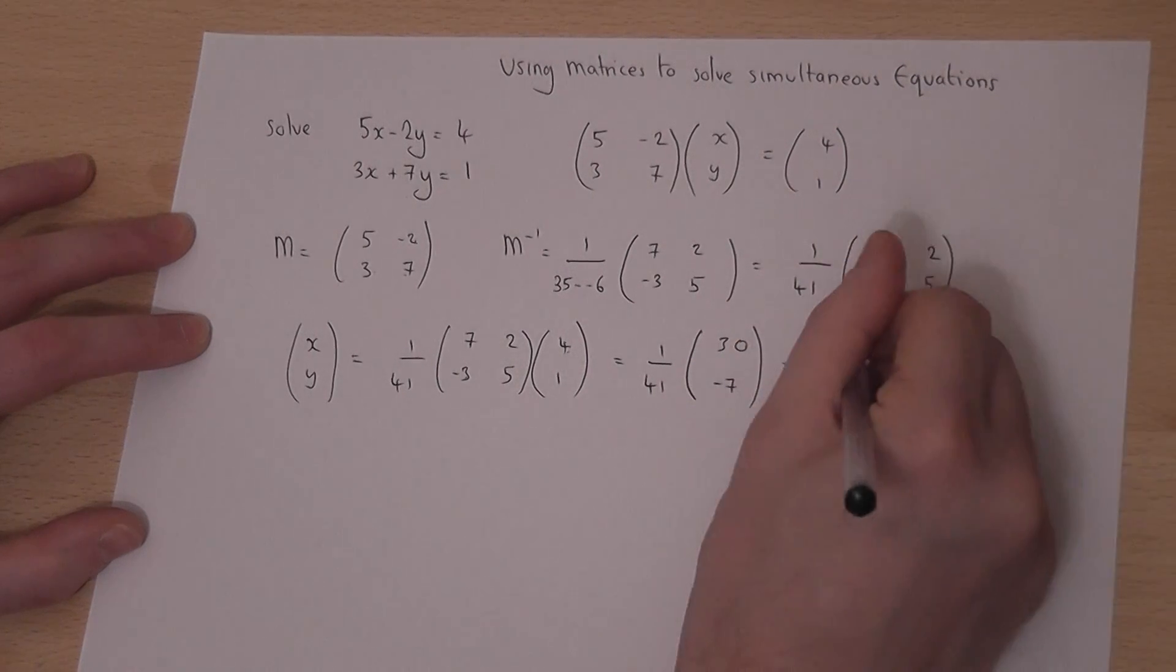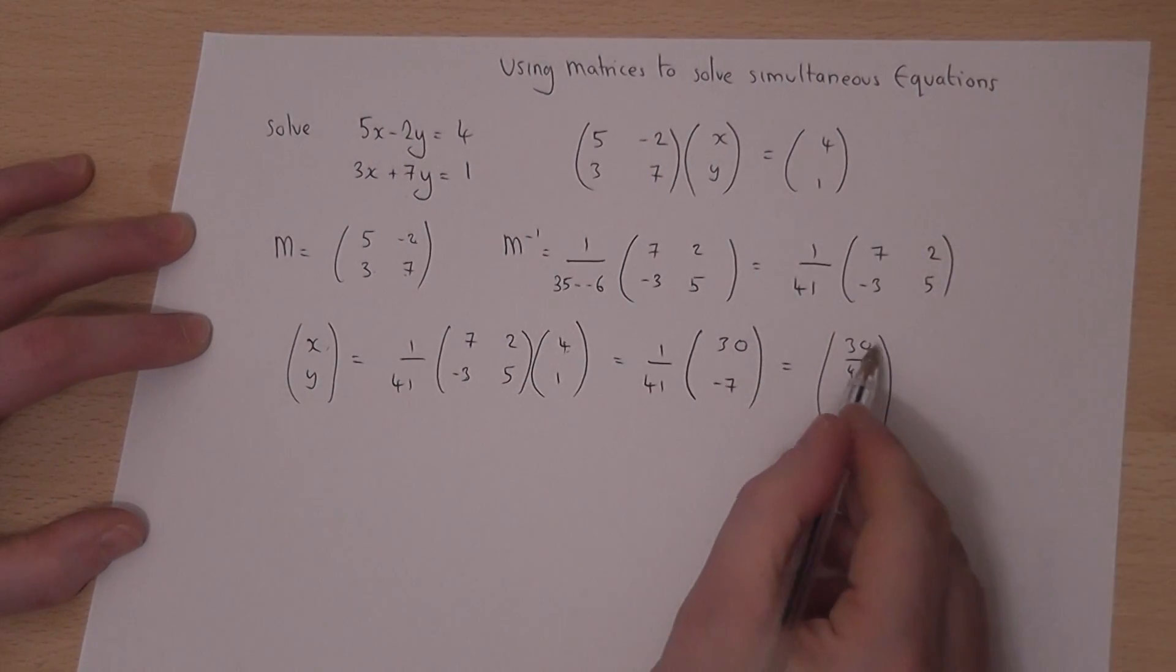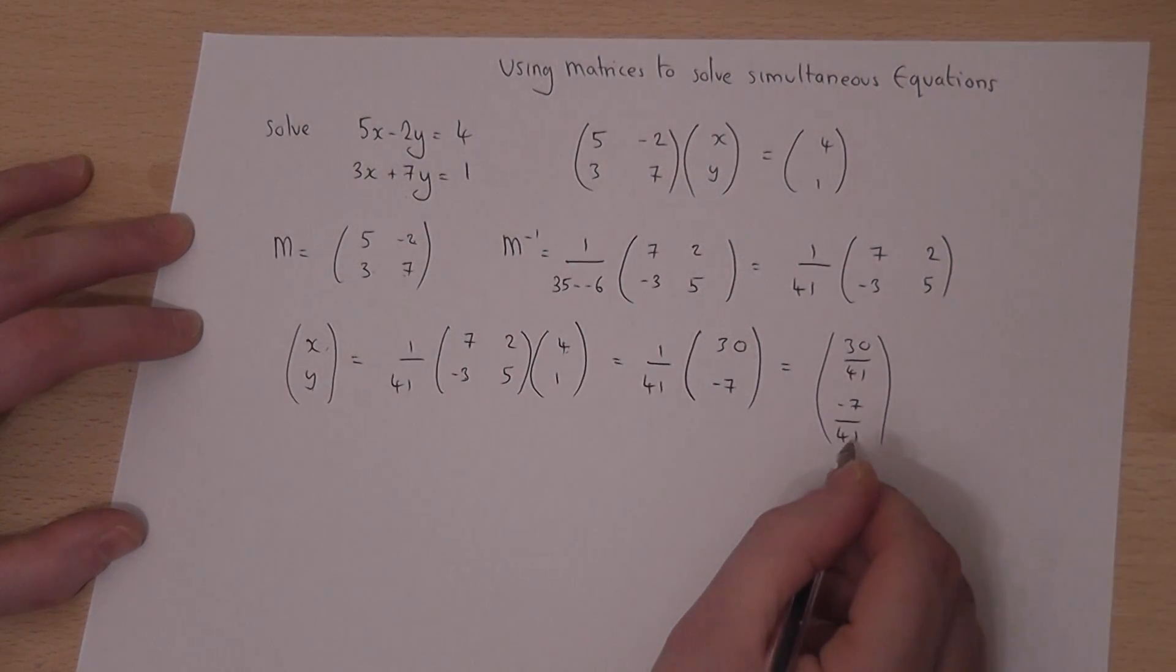Therefore we get 30 over 41 and minus 7 over 41. So x equals 30 over 41, and y equals minus 7 over 41.